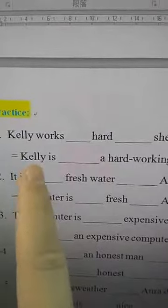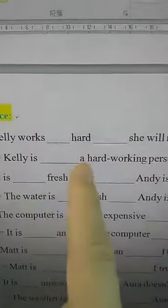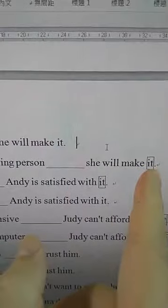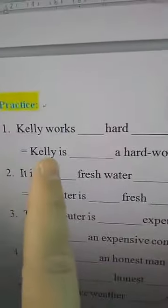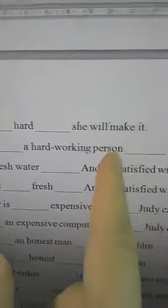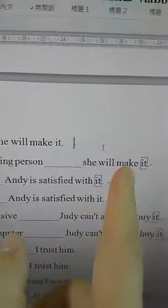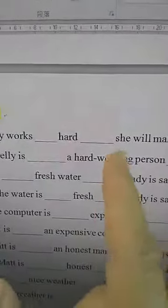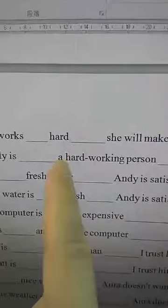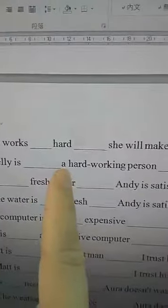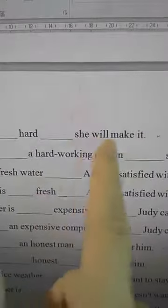Next: 'Kelly is ___ a hardworking person ___ she will make it.' You can see a noun here — a hardworking person — and don't forget the article. The answer is 'such': 'Kelly is such a hardworking person' — a noun — 'that' followed by one sentence: 'she will make it.'